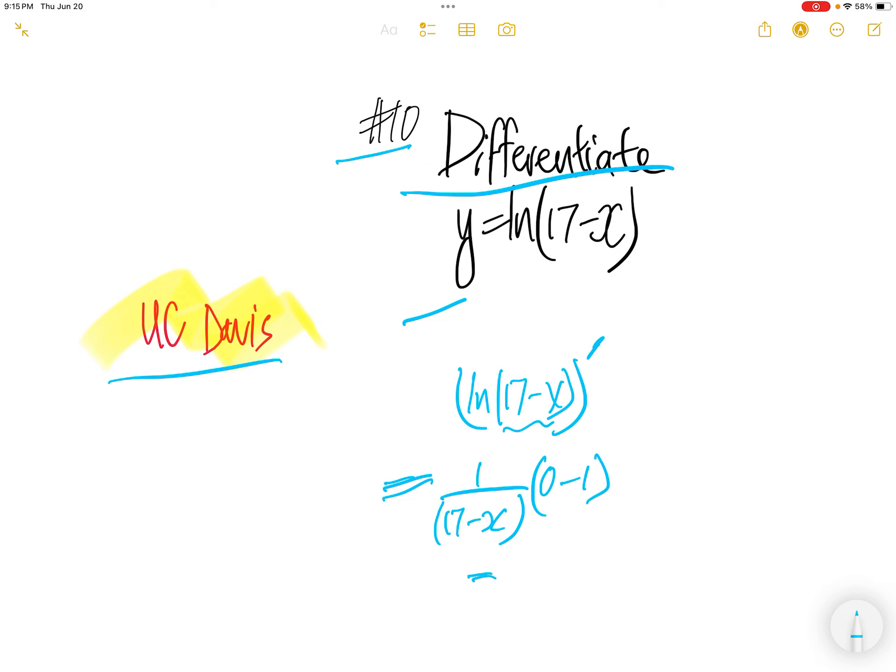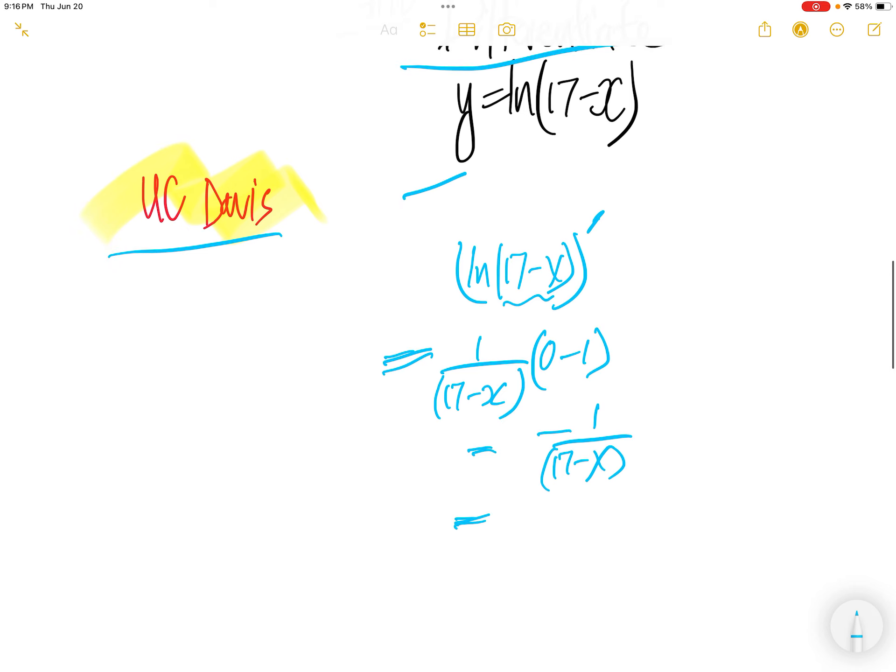Derivative of 17 is 0. Derivative of x is 1. So the answer is negative 1 over 17 minus x.